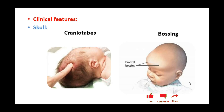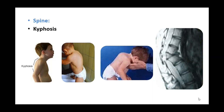The second feature is bossing of the skull, where bossing of the frontal and parietal bones becomes evident at around six months of age. A kyphotic hump may be seen even at a very young age, and when an MRI or X-ray is done, structures may be affected due to the sharp kyphotic deformity.